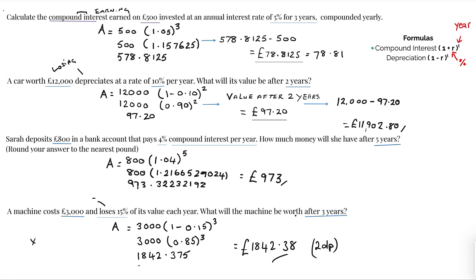It's asking us what the machine would be worth after three years and it literally just does that, so I've done it as 1842 pound 38 pence. So there's no subtracting anywhere, it literally is how much will it be worth after three years.